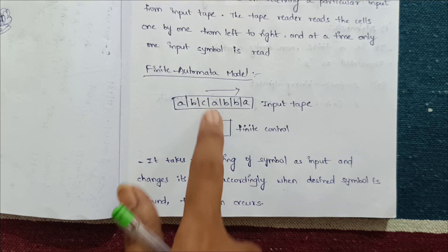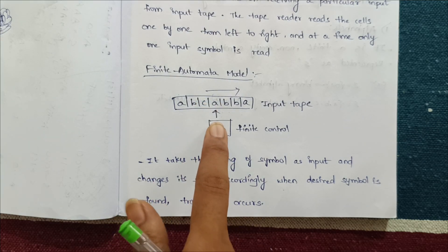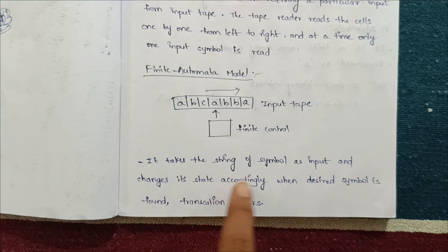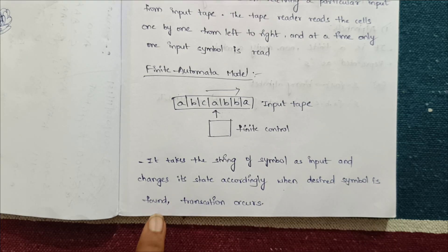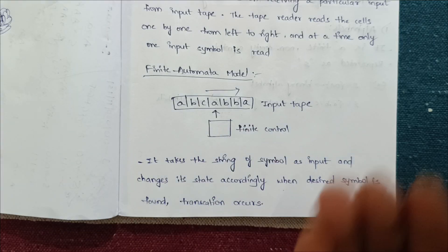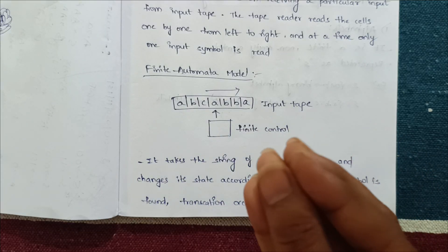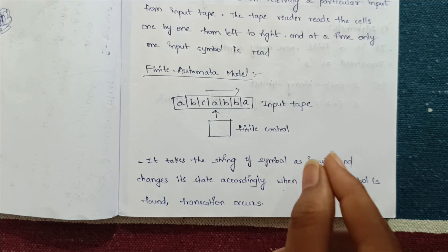From the input it takes input as A to finite control and changes the state accordingly. When the desired symbol is formed, it goes to the next state. When it reaches the final state, then the particular string is accepted.